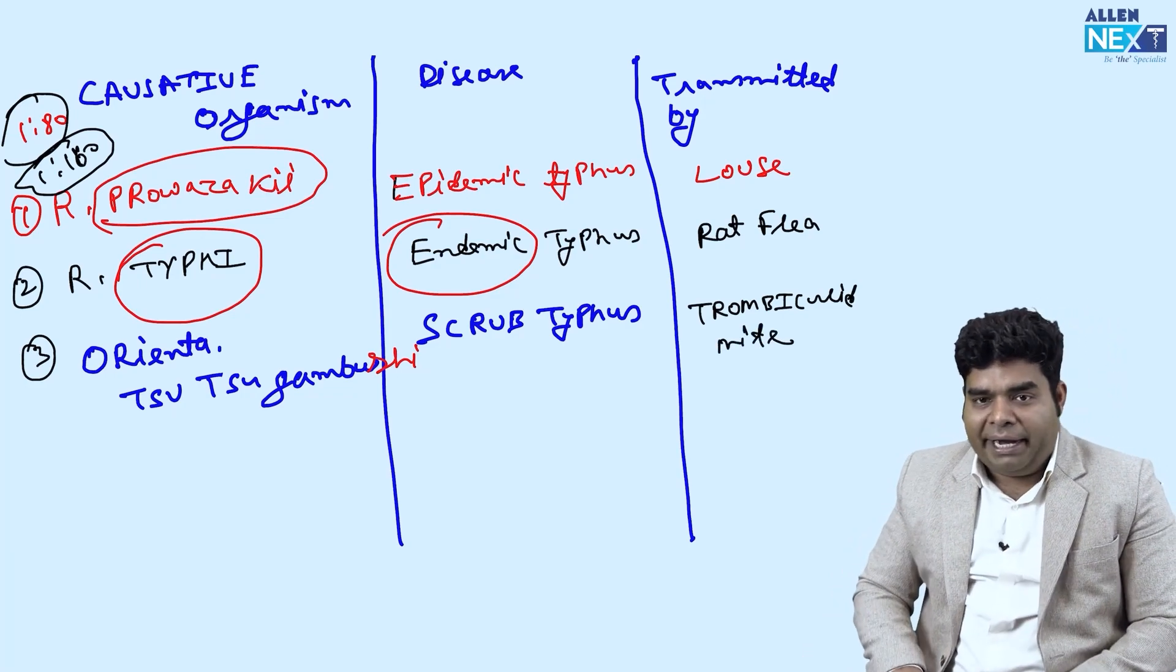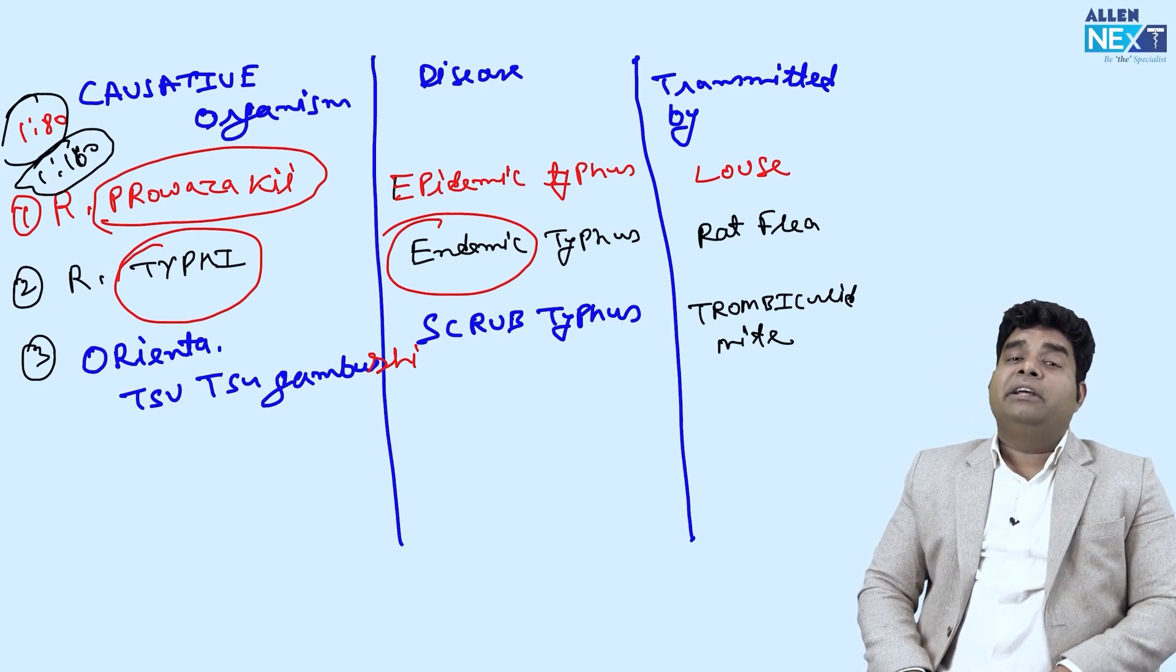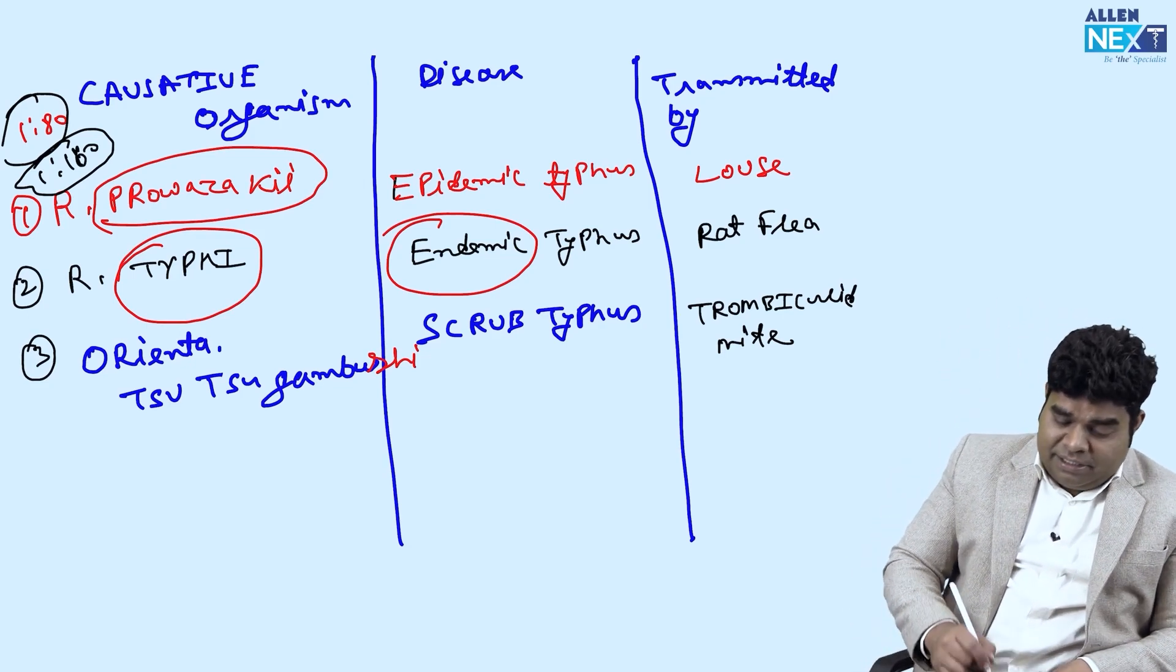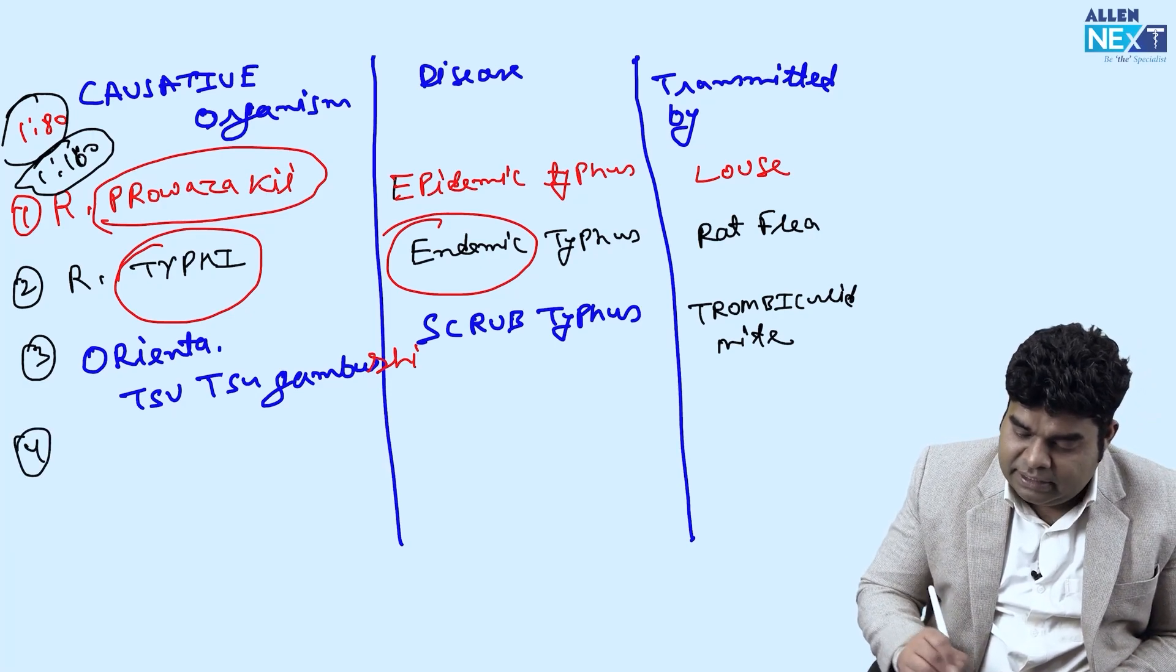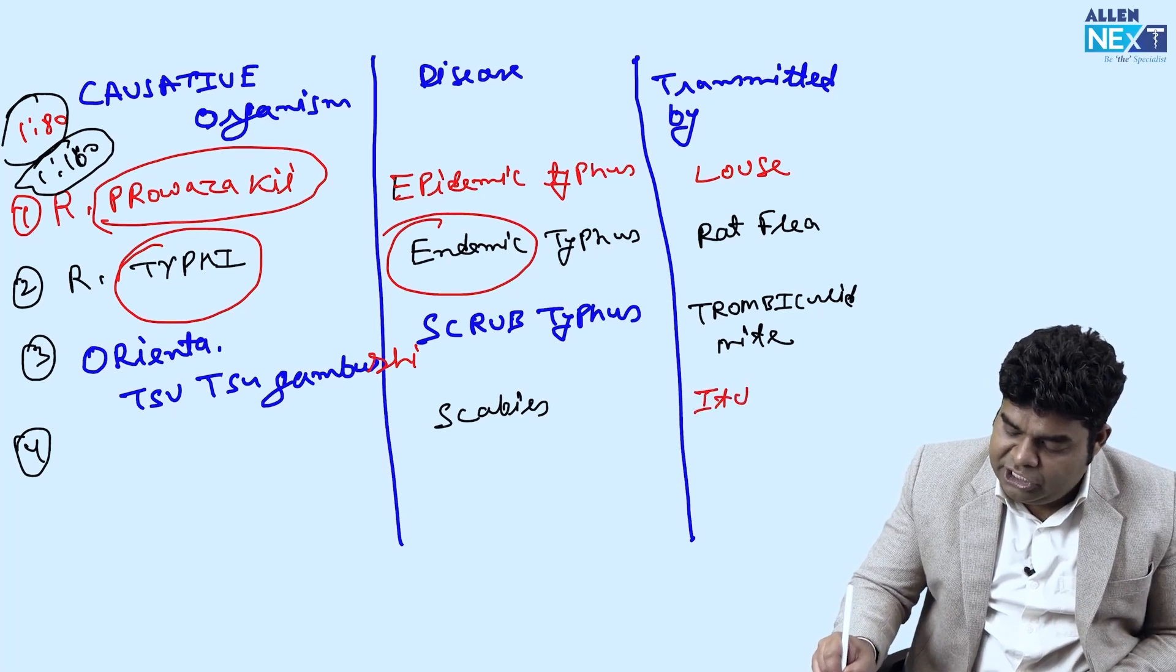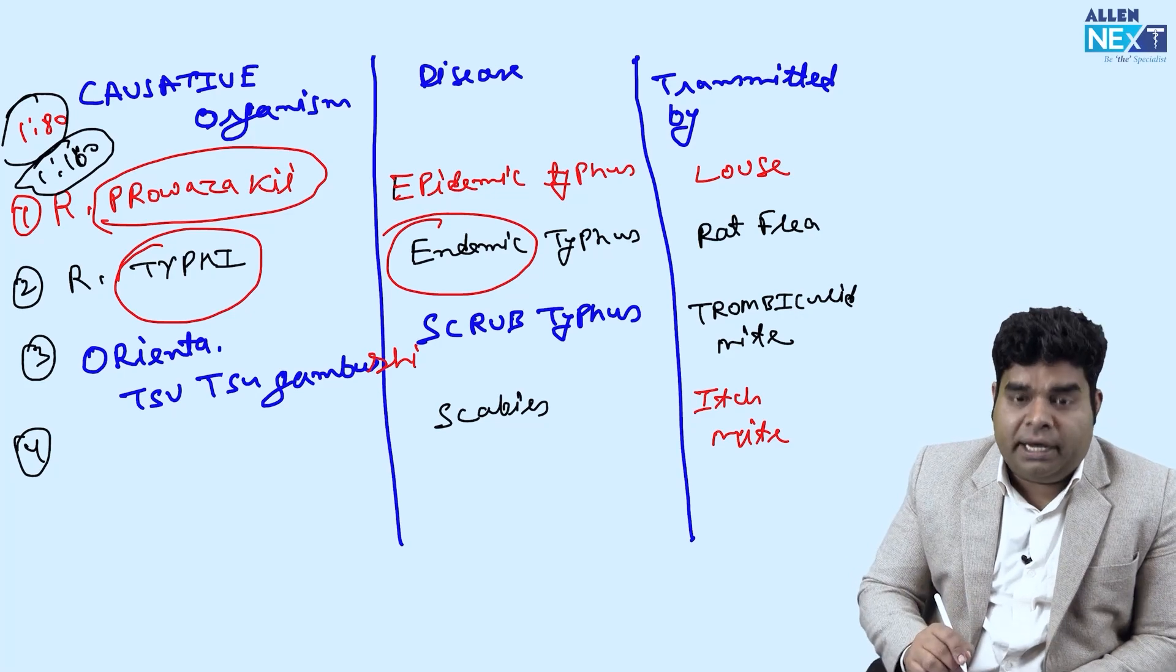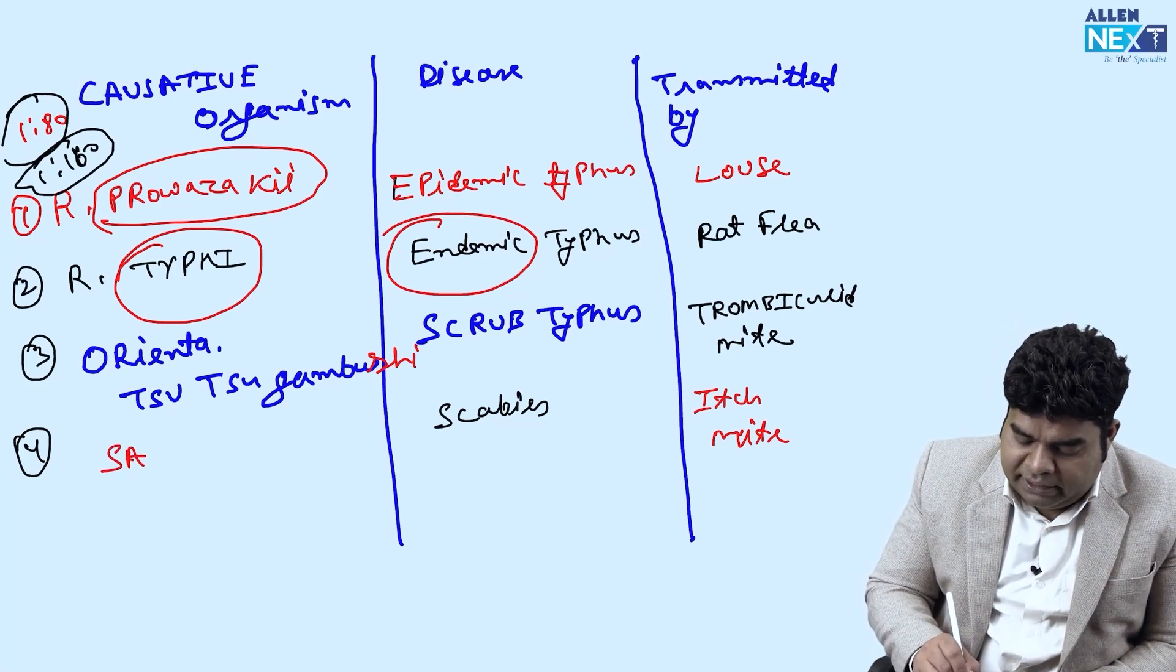What other disease transmitted by mite? One is relapsing fever, other is scrub typhus. Third is scabies. So, scabies is also transmitted by a special mite known as itch mite. And scabies is caused by sarcoptes scabiei.